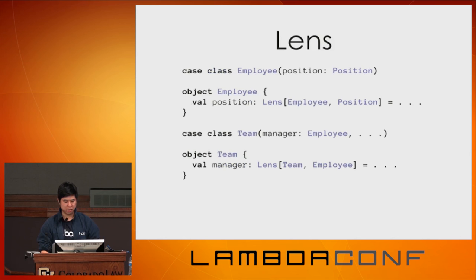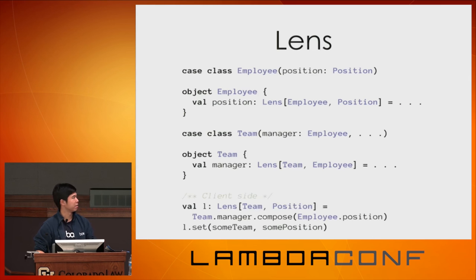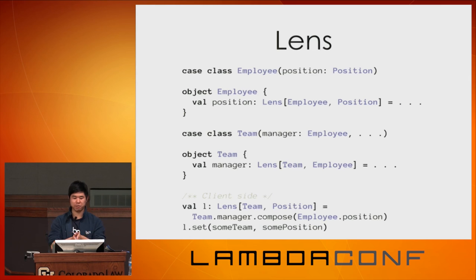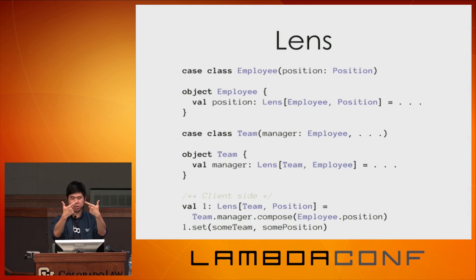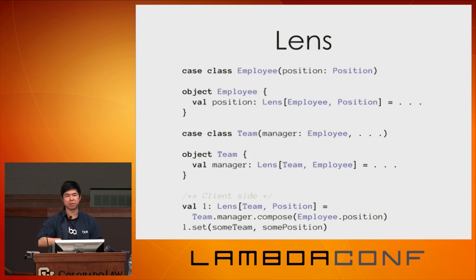As a simple example: an Employee contains a Position, giving us a Lens[Employee, Position]. A Team contains a Manager who is an Employee, giving us a Lens[Team, Employee]. We compose the manager lens with the position lens to get a Lens[Team, Position], which lets us set the manager's position directly — without doing a get, get, set, set chain. Composition is really nice: we focus on small things and compose them to create larger things.